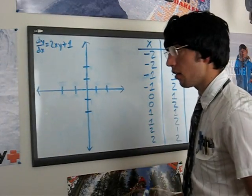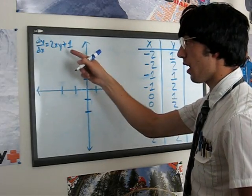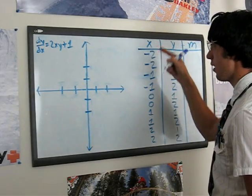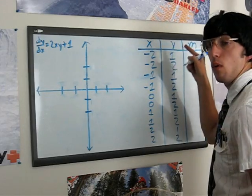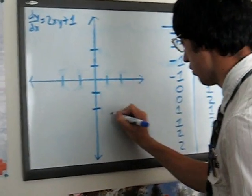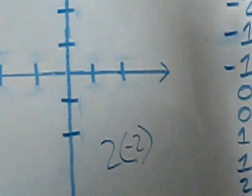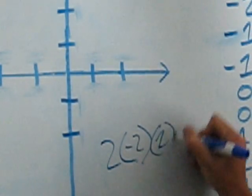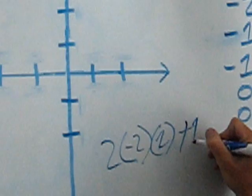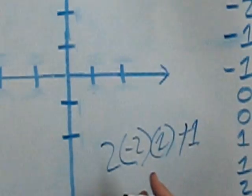Okay, to find the first slope point, you'll take equation 2xy plus 1, and you'll go to charts where x equals negative 2, y equals 1. Now, you get the equation 2, your x is negative 2, your y is 1, and you plus the 1. Now, what does that equal? Markham!